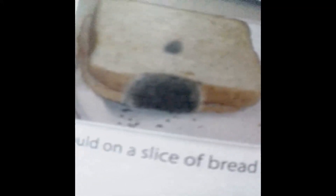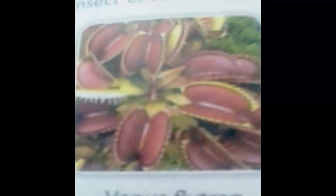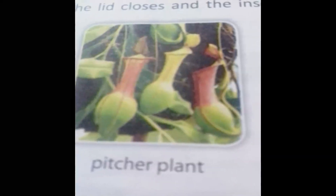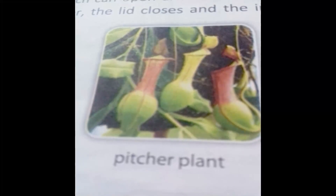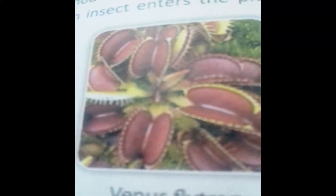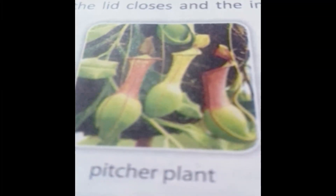Now we will see some unusual but amazingly interesting plants. When we see their pictures, they look very nice. There are some unusual plants like Venus flytrap, sundew, and pitcher plant which eat insects. These plants eat insects and their leaves are modified to capture insects. Such plants are called insectivorous plants because they eat insects. In the pitcher plant, the leaf is modified into a pitcher-like structure.